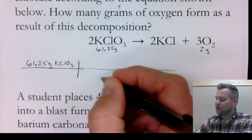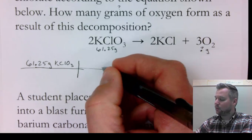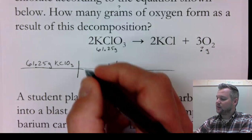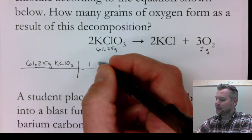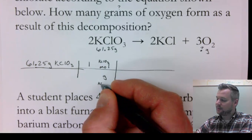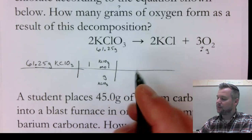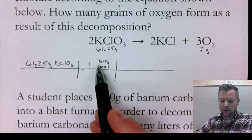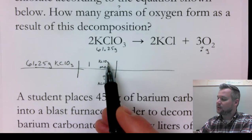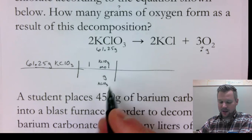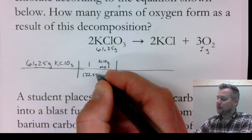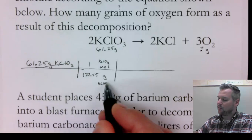I need to make grams go away and then I'm trying to get to moles. I can go from grams to moles — that's a mole fact off a mole hill — and this is one mole of potassium chlorate. Then I need to know how heavy potassium chlorate is. Using my periodic table: potassium is 39.1, chlorine is 35.45, oxygen is 16 times 3. That gives me 122.55 grams. The grams of potassium chlorate go away.